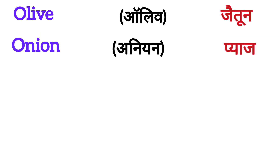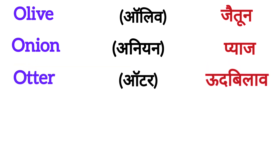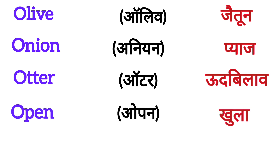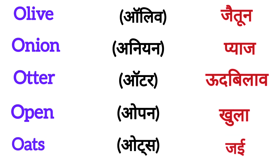Next is ONION. ONION means PAGE. Next is OTTER. OTTER means OUD BILAV. Next is OPEN. OPEN means KULA. Next is OATS. OATS means JAYTUN.